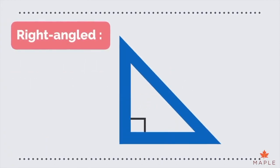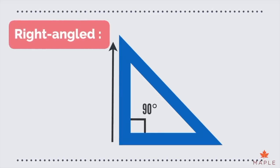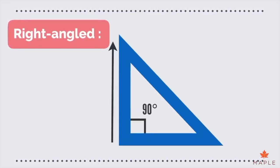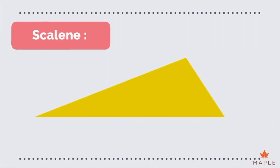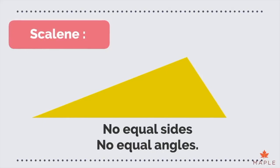In right-angled triangles, one of the angles is a right angle, which is exactly 90 degrees. Scalene triangles have no equal sides and no equal angles.